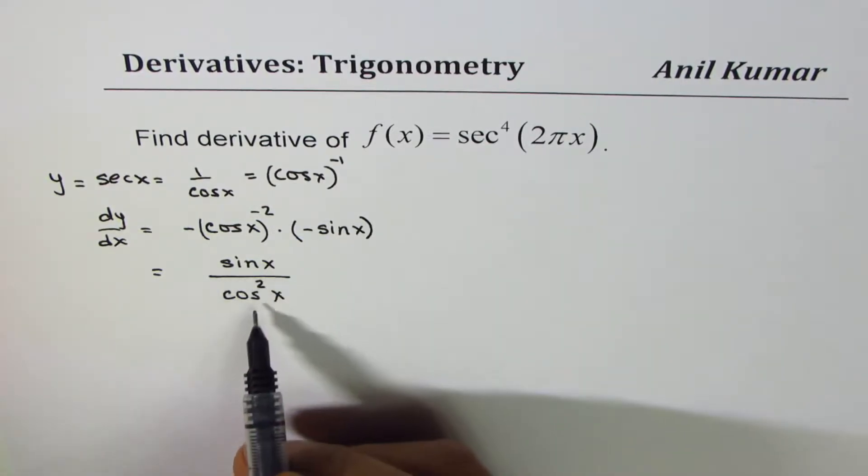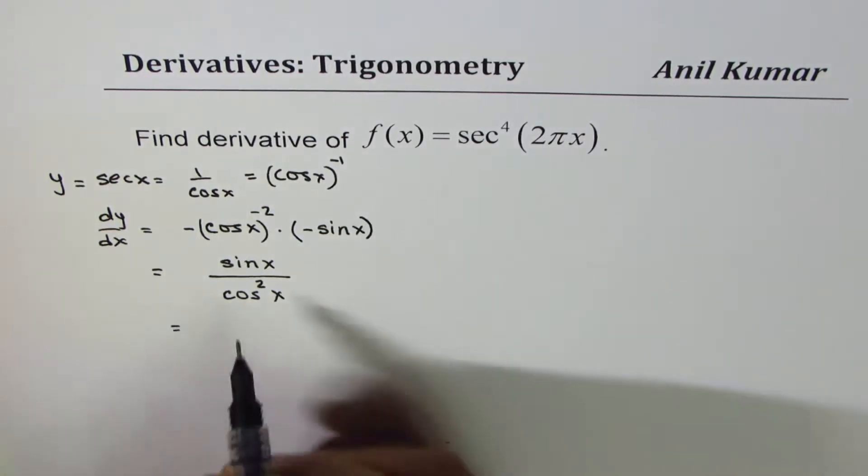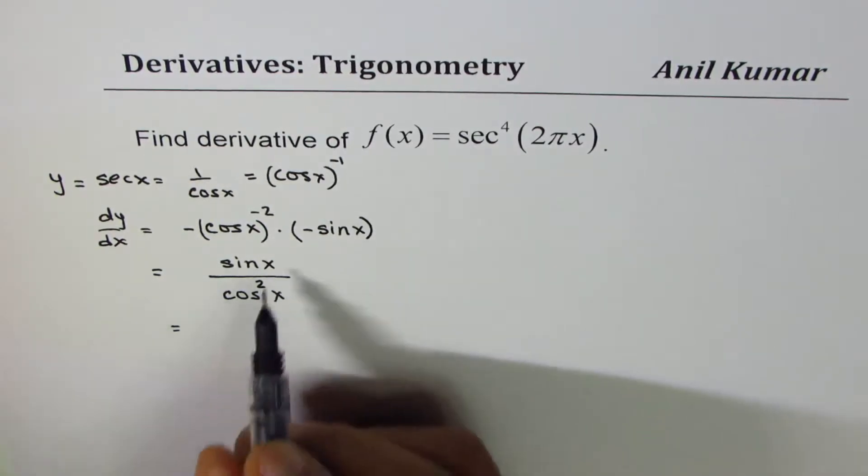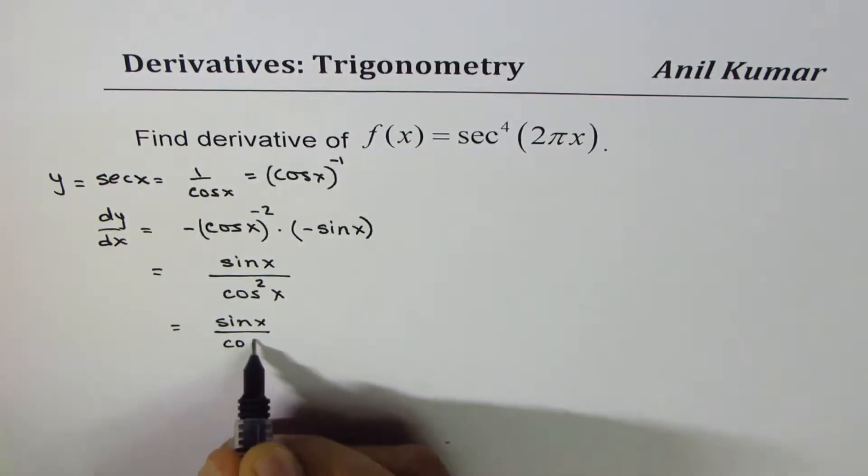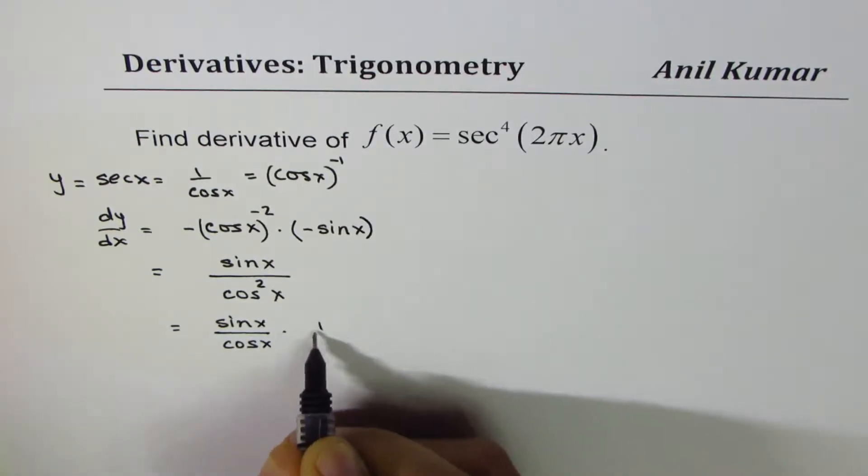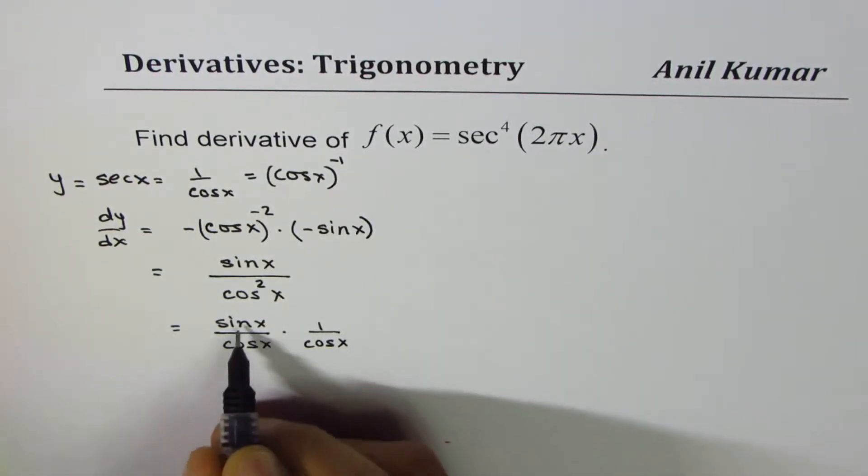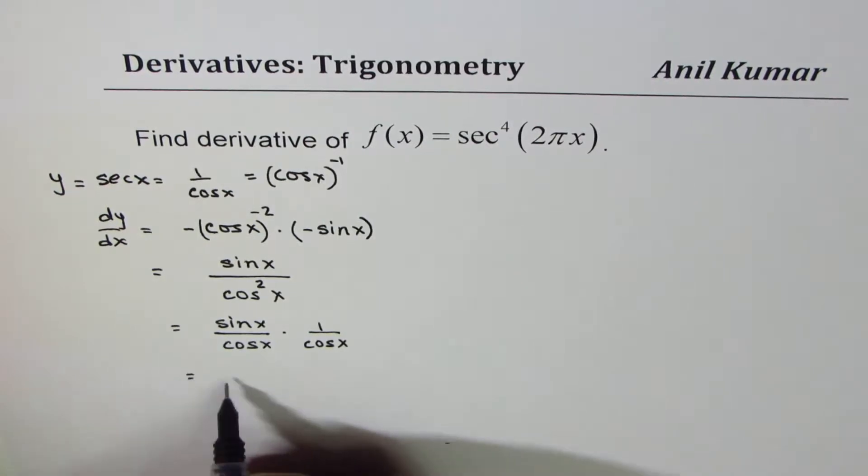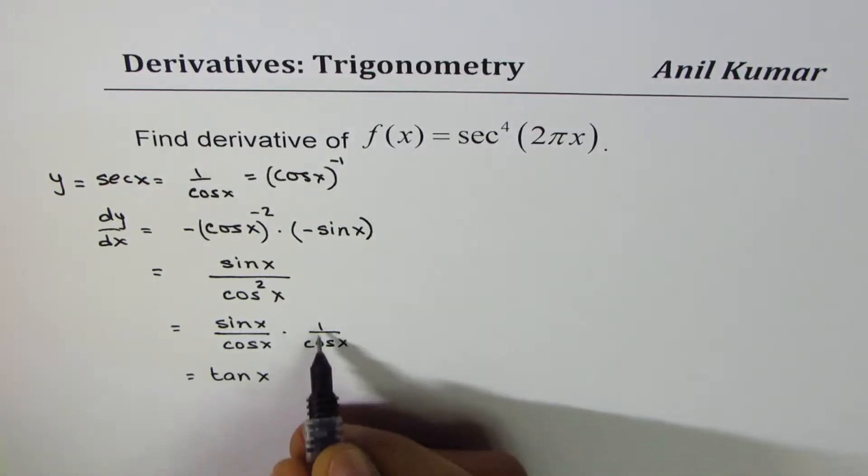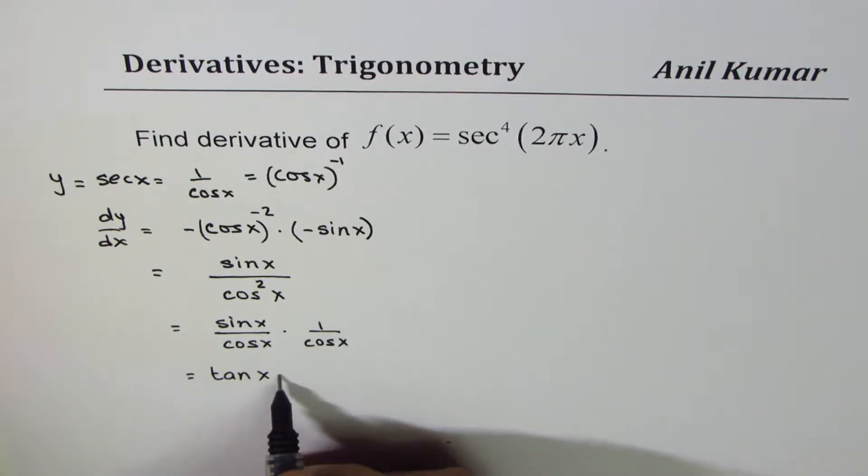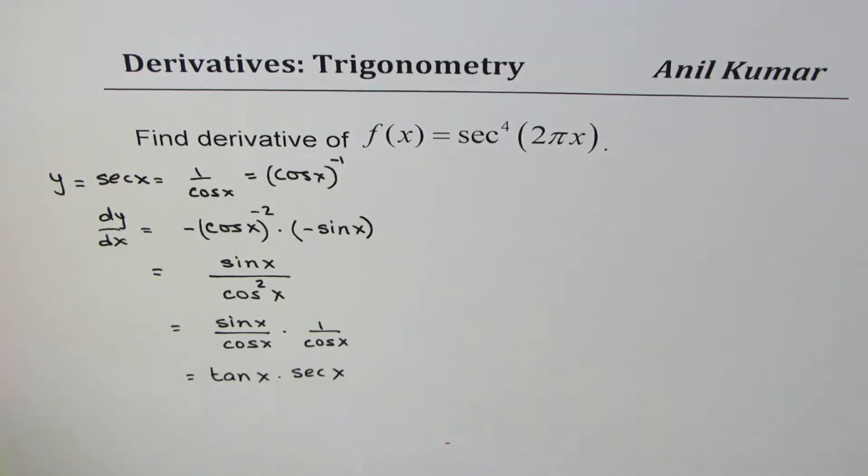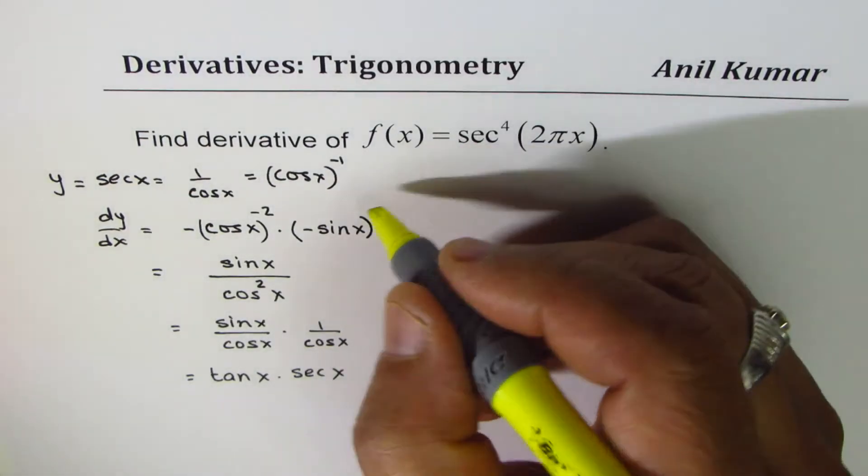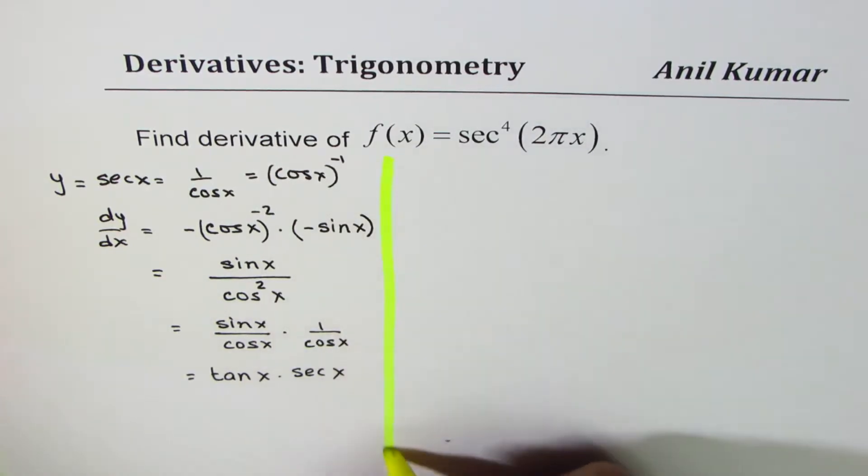Now there is sine x over cos x. We prefer to write this as a combination of sine x over cos x times 1 over cos x. So that is tan x, and 1 over cos x is secant x. So the derivative of secant x is tan x secant x. That was the derivation of the derivative of secant x.